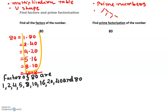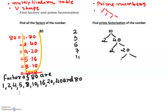For prime factorization, we need prime numbers, so we start with the smallest prime: 2, then 3, then 5, then 7, then 11, and so on. Let's make our first branch: 2 goes evenly into 40, times 2 goes into 20, still goes into 10, still goes into 5. Now 2 and 5 are both primes — this is where we stop.